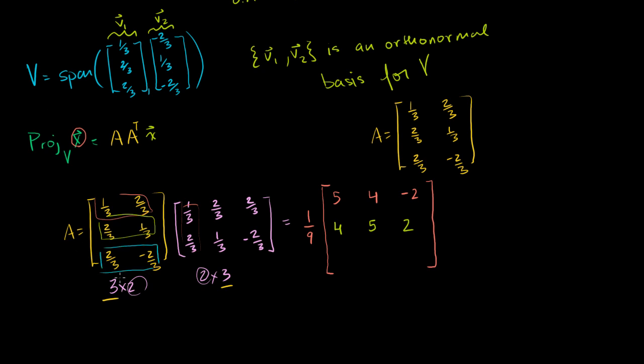I hope you already appreciate this is a lot less painful than when we had to take A transpose A and then inverse it in between. We're just taking A times A transpose. So 2 3rds times 1 3rd. So that's 2 9ths minus 4 9ths. So that's minus 2 9ths. And then we have 4 9ths minus 2 9ths. That's 2 9ths. And then we have 4 9ths plus 4 9ths. And so that is 8 9ths.